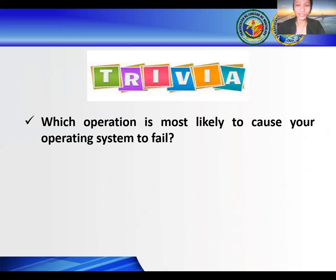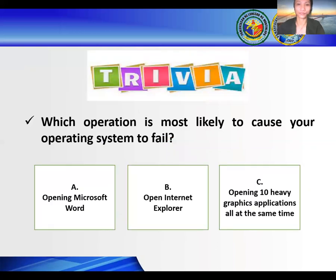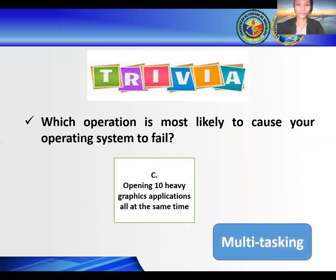To answer this, let us do an exercise. In your opinion, which operation is most likely to cause your operating system to fail? Most of you would have guessed letter C: opening 10 heavy graphics applications all at the same time. So if you were testing this operating system, you would realize the defects are likely to be found in multitasking modules, and that needs to be tested thoroughly.